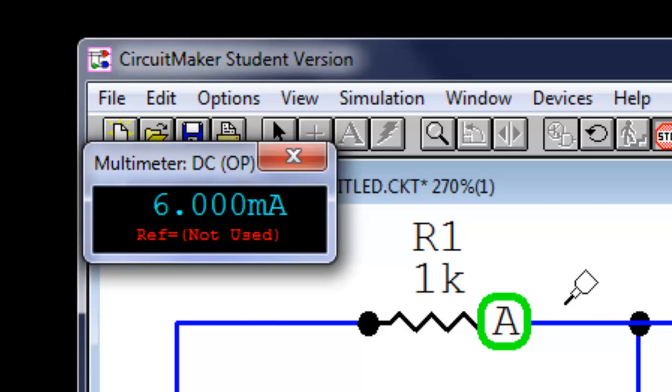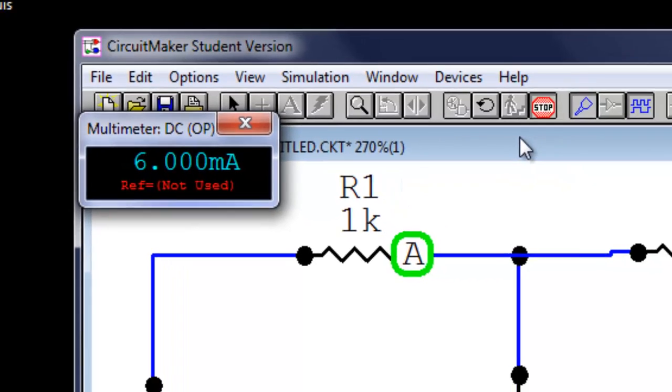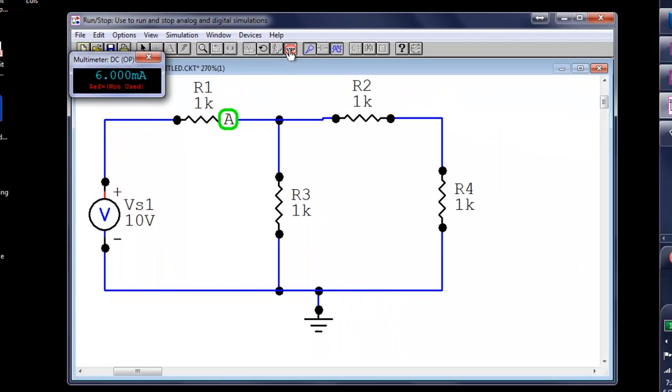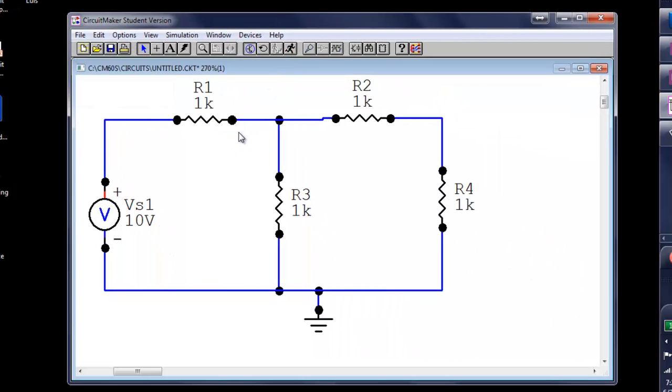First, another warning. Circuit Maker uses its own convention to say when an element is delivering power, or when it is absorbing power. And it's kind of bizarre, in my opinion, but that is the way it is. I still like Circuit Maker a lot.